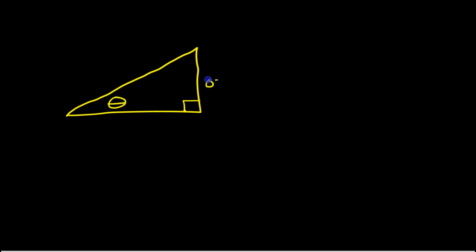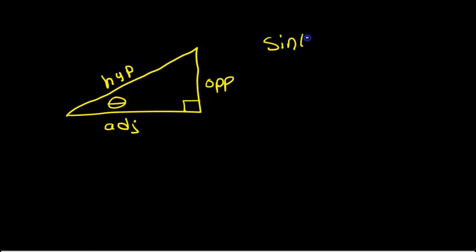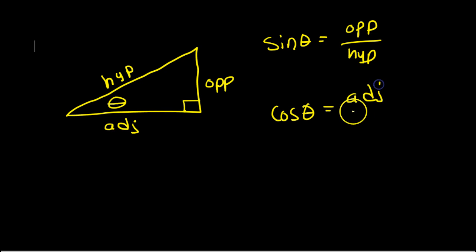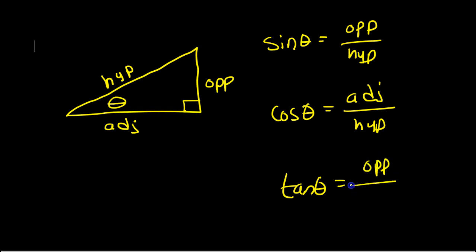First, we need to cover a little background information. Back in the day, in geometry, when you first learned about tangent, sine, and cosine, they would just give you a right triangle floating in space, and they would say, if you have an angle, then one of these legs will be the opposite leg, and the other leg is the adjacent leg, and then you have a hypotenuse. The way we defined sine, cosine, and tangent was: sine of angle theta was opposite over hypotenuse, cosine of angle theta was adjacent leg over the hypotenuse, and tangent of theta was the opposite leg over the adjacent leg. That's how you learned it back in the day.